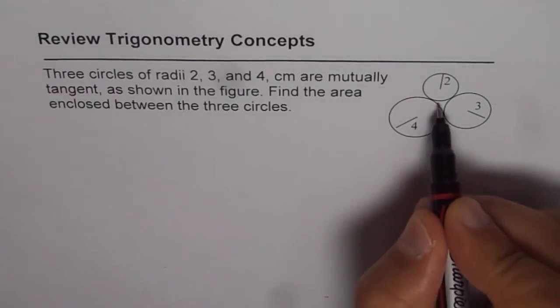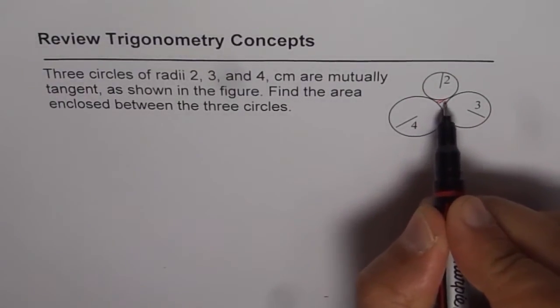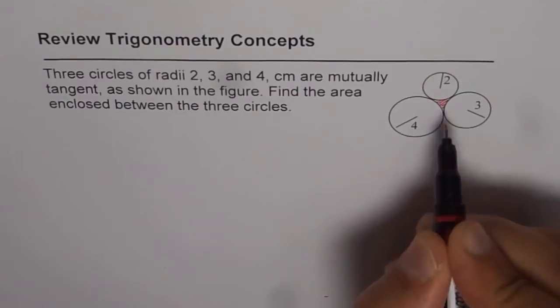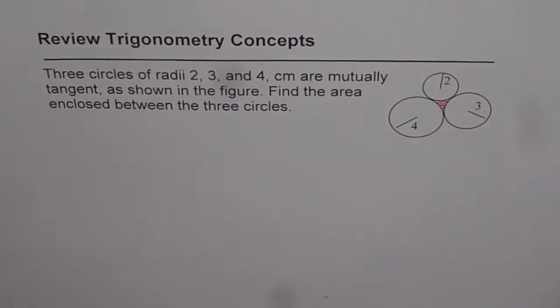These are the three circles and their radius is 2, 3 and 4. That means the area, the vacant space in between. So this is the area which we need to find. How are you going to do it? Think about it.